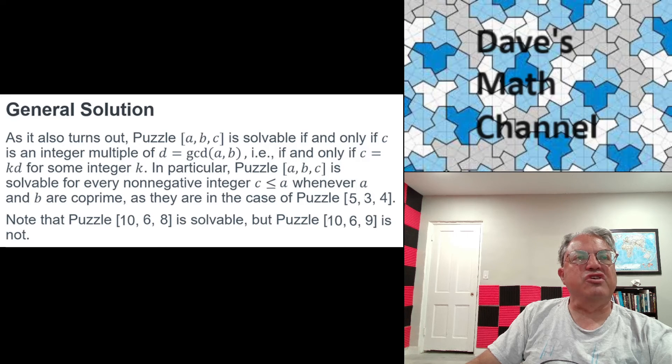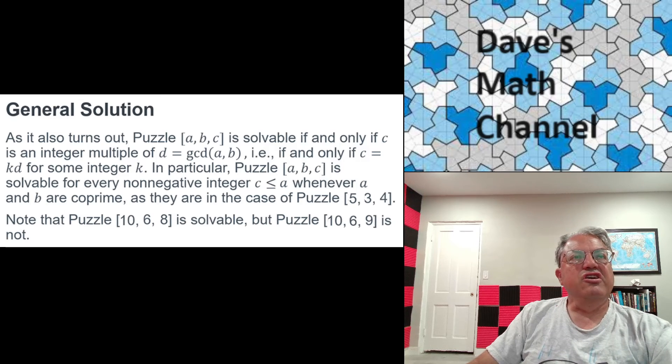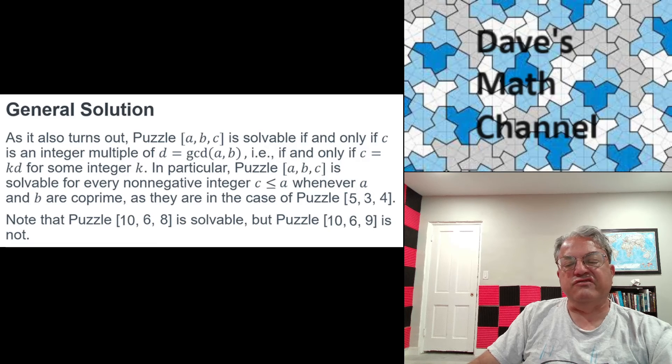And in particular, if a and b are relatively prime, meaning they don't share a common divisor, as in the case of the [5,3,4] puzzle - 5 and 3 are coprime - in that case, c can be any integer up to a. You can measure any integer number of liters of water you want up to maximum capacity, as long as the capacities of jug A and jug B are relatively prime, as they were in the case of the 5 and 3 gallon jugs. So that means, in particular, we can measure 4 liters of water.